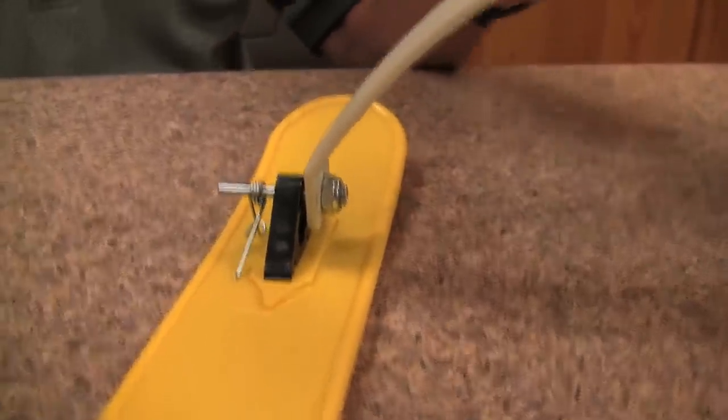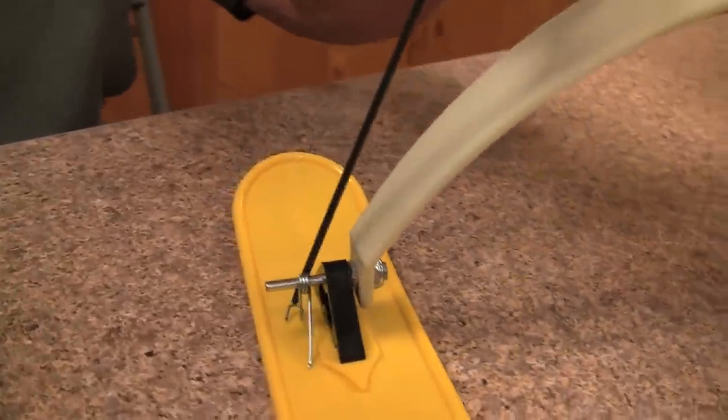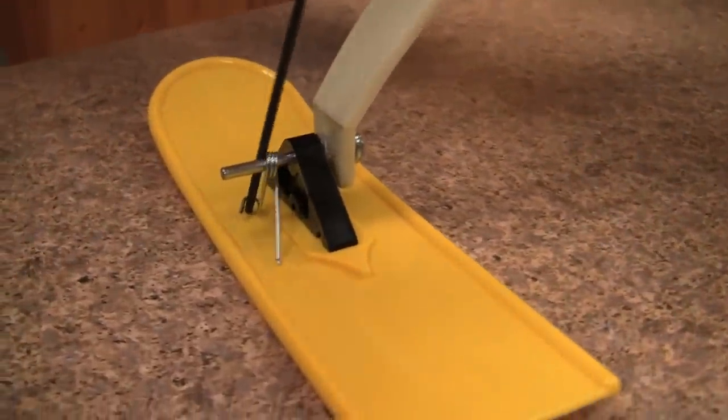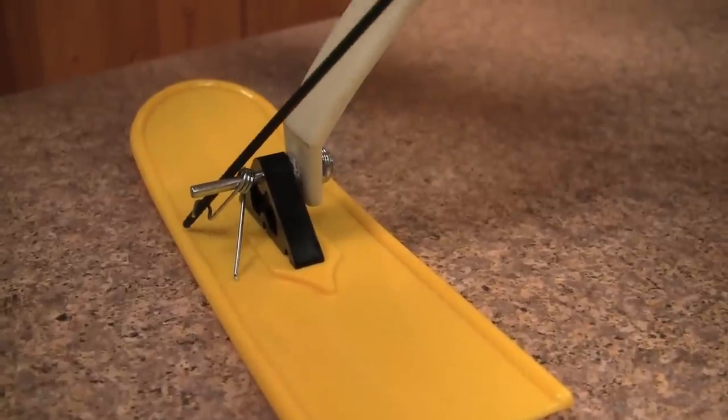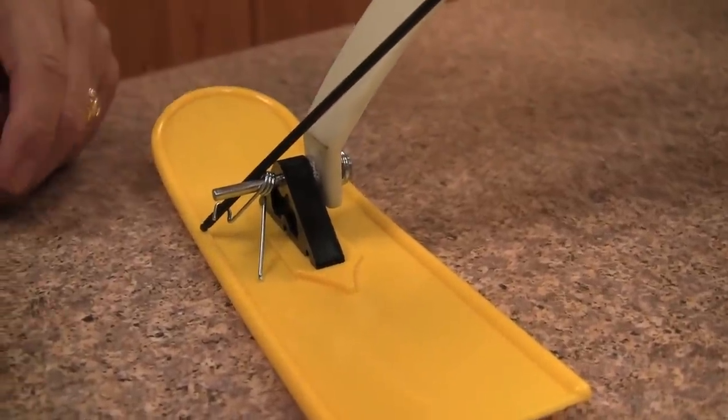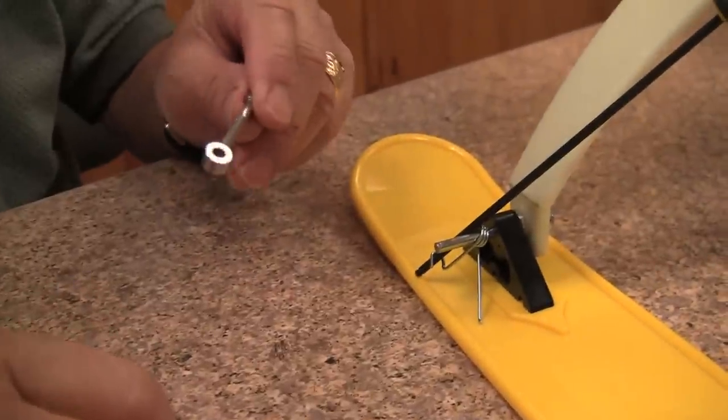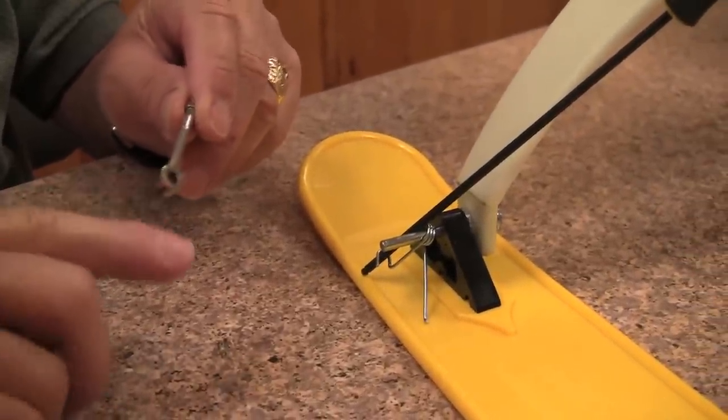You need a 7/64 Allen wrench. A little trick we found. It's kind of laid like that. And take the bolt that comes with this ski, put in a couple of threads into the wheel collar.